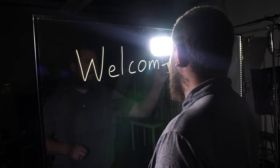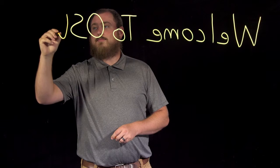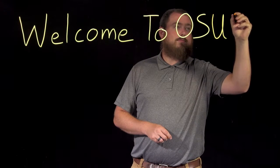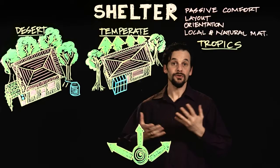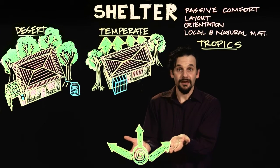The Learning Glass is like a transparent whiteboard that allows you to face the viewer as you write or draw. The video is then flipped during post-production so the text and images are displayed correctly.